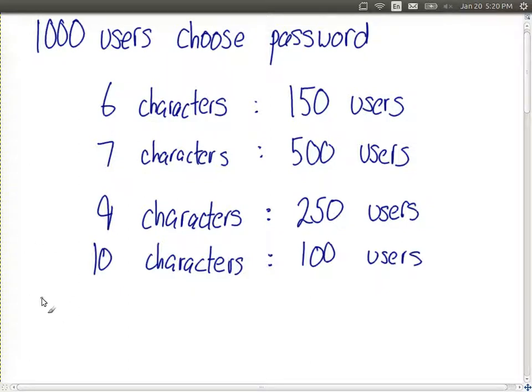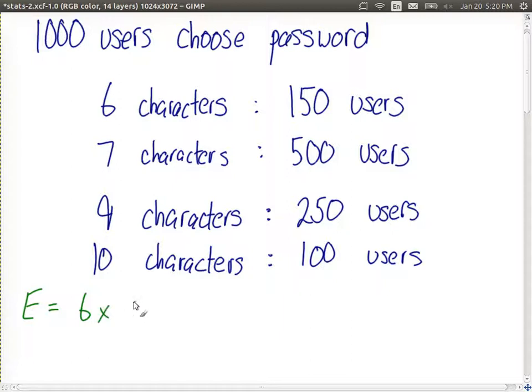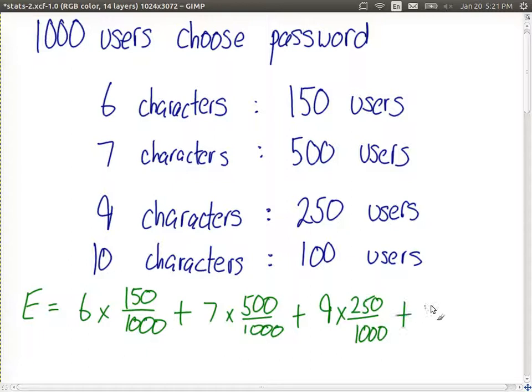So we can quite easily calculate the expected value for the system. That is, the expected password length or the average password length. We can calculate it as the expected value of the first event: 6 characters times the probability that we have 150 users out of 1,000 in total. And the expected value of the second event: 7-character password times 500 users over 1,000, which is 50% or 0.5.